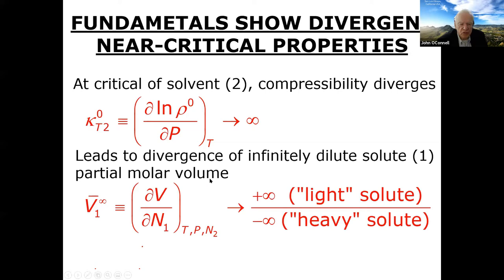The infinitely dilute solute partial molar volume also diverges at the critical point — going to plus infinity for a light solute and minus infinity for a heavy solute. This affects the density of the solution. There is also a heat capacity divergence: the heat capacity difference between the real partial molar infinite dilution value and the ideal gas goes to both plus and minus infinity as you pass through the critical point, meaning enthalpies and energy effects are dramatically different than expected.